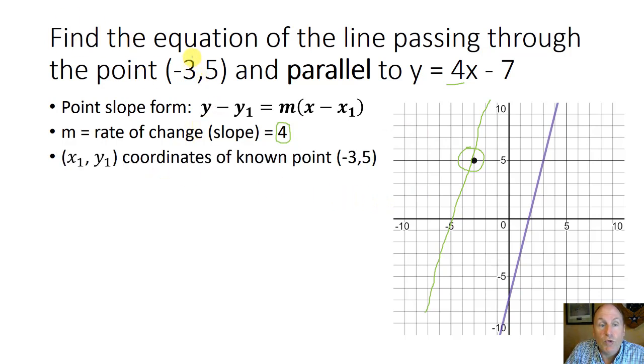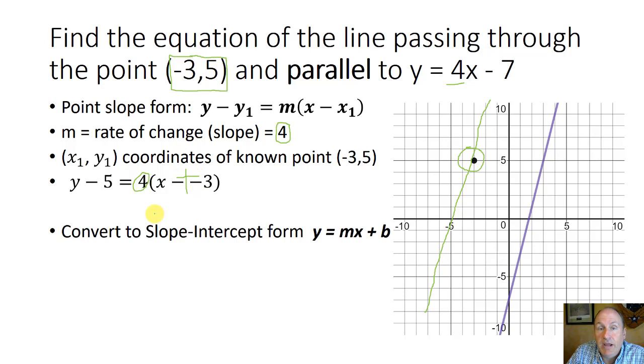And since we're given the coordinates of a point that must be on this parallel line as negative 3 comma 5, that's our point. Negative 3 is x and 5 is our y. So we'll take that and substitute into the point slope form. So we get y minus y1, which is 5, equals the slope or rate of change 4 times x minus x1. So x1 has a value of negative 3. So this is x minus negative 3 or x plus 3. Honestly, that would be a valid form of an answer.